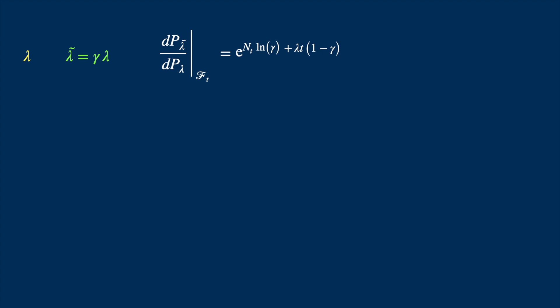So this Radon-Nikodym derivative is like a density. So it needs to have certain properties which we need to check. So the first one is it's got to be positive, which is easy to check, because we have the exponential of something which is not minus infinity, so it's got to be greater than zero.